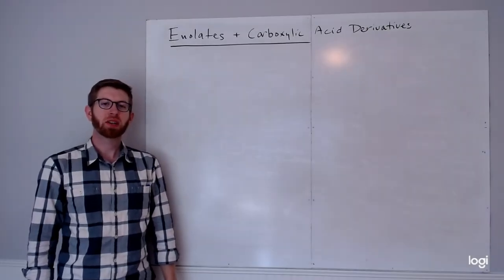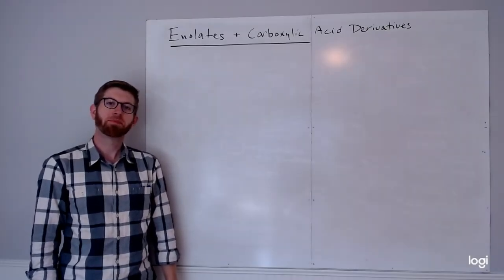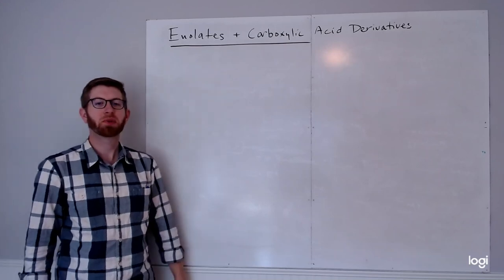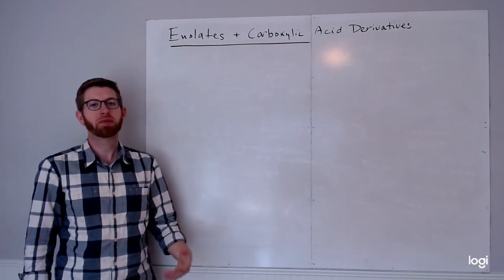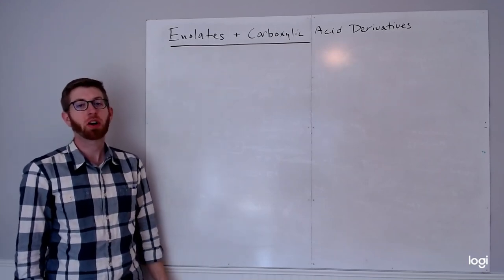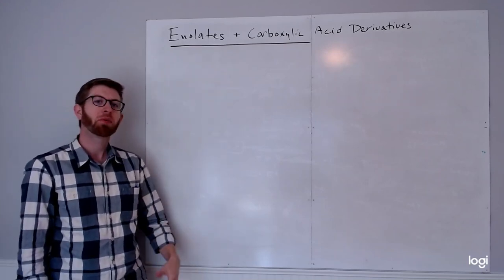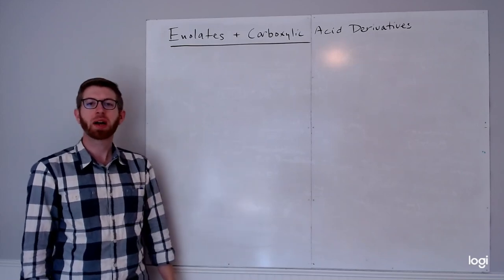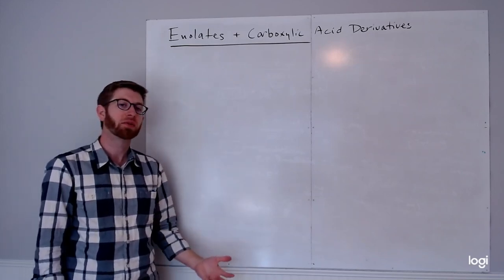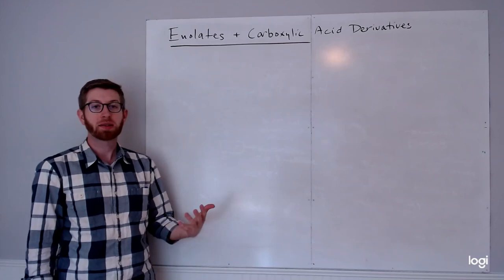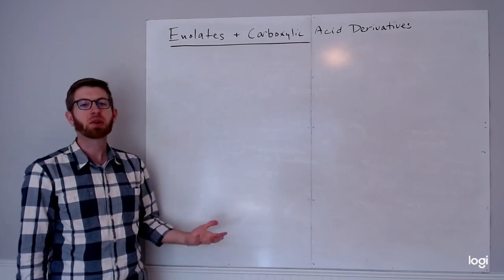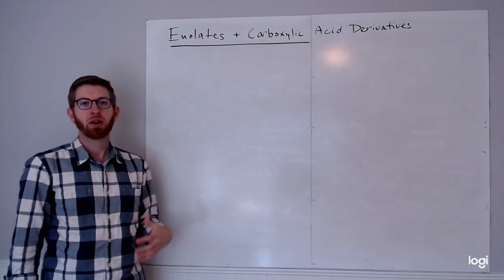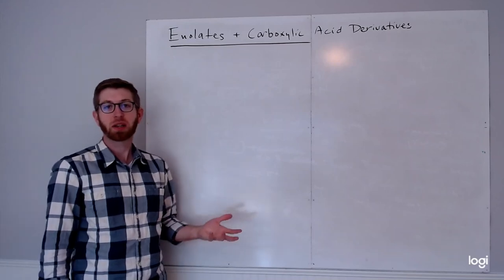Welcome to the fourth and final video for SL09. In this video, we'll be looking at what happens when enolates react with different kinds of electrophiles. We'll still be focusing on carbonyls, but rather than ketones and aldehydes, we'll specifically be looking at what happens when we use carboxylic acid derivatives as our electrophilic species. This would include things like esters, acid chlorides, or amides.